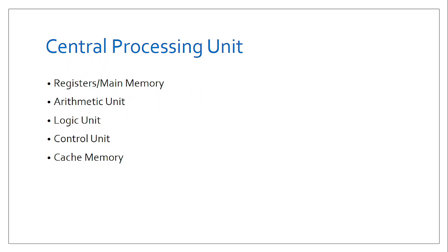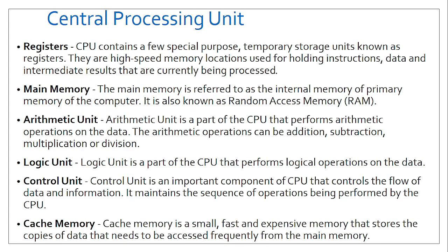The control unit has the capability of managing instructions coming from input before releasing them to the output. Cache memory is a very vital memory that the CPU uses to fetch frequently accessed instructions, rather than going back to the main memory. Registers are special purpose and temporary storage units that are very powerful — they send and receive data at very high speed. A good example of main memory is RAM, commonly referred to as the working area of the computer. RAM is volatile; when the power goes, we lose the information stored within it.